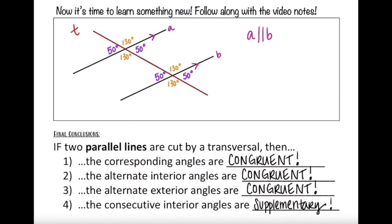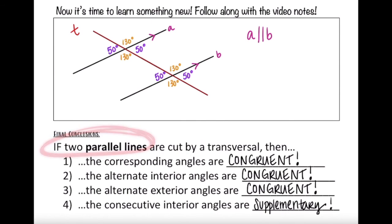To recap, these are the four statements we now know to be true when two parallel lines are cut by a transversal: corresponding angles are congruent, alternate interior angles are congruent, alternate exterior angles are congruent, and consecutive interior angles are supplementary. That's it for today's lesson — see you next time.